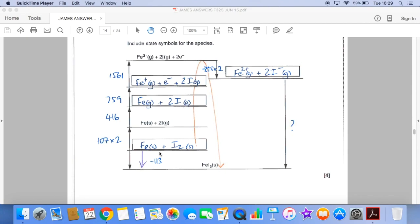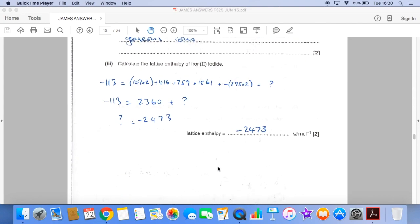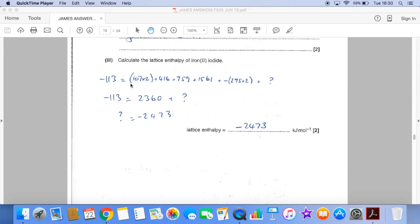So essentially, this minus 113, which we can just say make out the purple arrow there, that's one route to go from here to here. And the other route is all the way around. So we're using Hess's law essentially to say that this route here, the enthalpy change in this route here, is equal to the sum of the enthalpy changes in this route here. So there's one route. There's the other route. All of that, including the unknown. So we basically just work out what all this is and then take it over to the other side, change its sign, and we get the question mark, the unknown. The lattice enthalpy comes out at minus 2473.